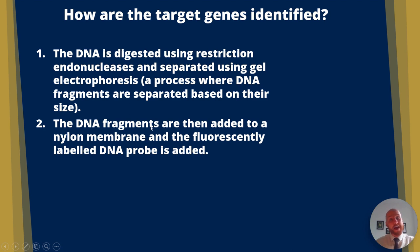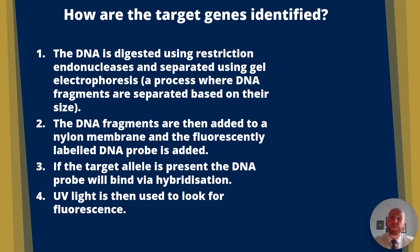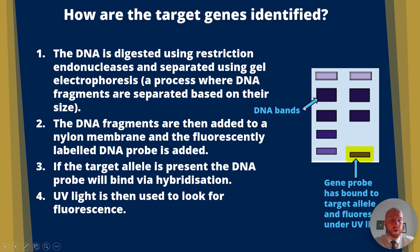The DNA fragments are then added to a nylon membrane, and the fluorescently labelled probe is added. If the target allele is present, the DNA probe will bind via hybridisation. UV light is then used to look for fluorescence. We can see the DNA bands here — these pieces of DNA have been snipped up using restriction endonucleases, the gel has been run, and we've got bands where the same fragments are grouped together. You can see the gene probe binding to the target allele and fluorescing, so we know that allele has bound to the probe.